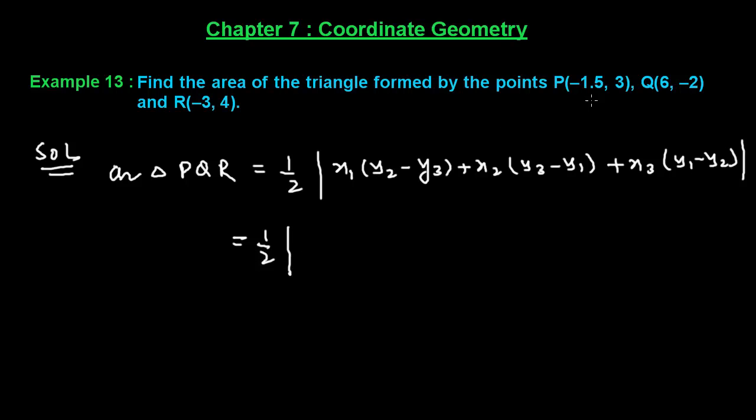This equals 1/2 times the modulus of: x1 is -1.5, y2 is -2, y3 is 4, so -2 minus 4. Then x2 is 6, y3 is 4, y1 is 3, so 4 minus 3. Plus x3 is -3 times y1 minus y2, which is 3 minus (-2), or 3 plus 2.